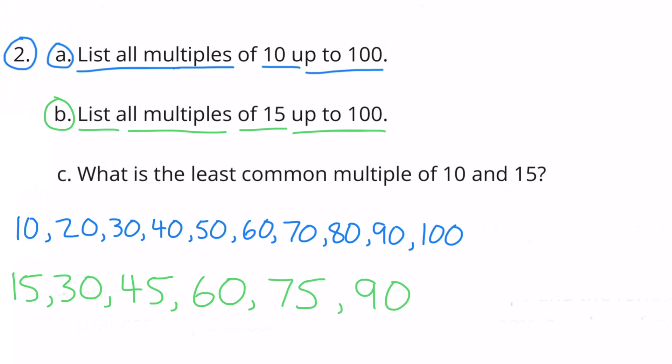B. List all multiples of 15 up to 100. It's the same idea. We're going to count by 15: 15, 30, 45, 60, 75, and 90.